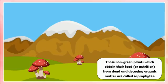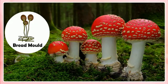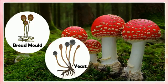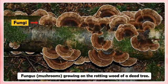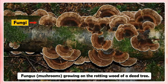Saprophytes. Those non-green plants which obtain their food or nutrition from dead and decaying organic matter are called saprophytes. The fungi such as mushrooms, bread mold and yeast are saprophytes. Saprophytic fungi secrete digestive juices on the dead and decaying organic matter and convert it into a solution, then absorb the nutrients from this solution. This mode of nutrition is called saprophytic nutrition.